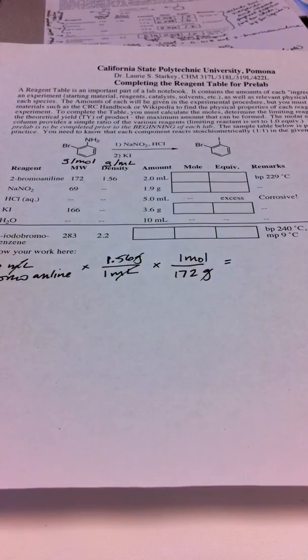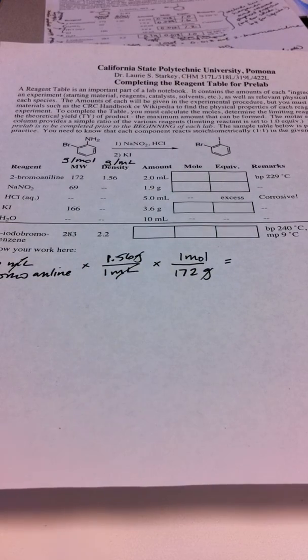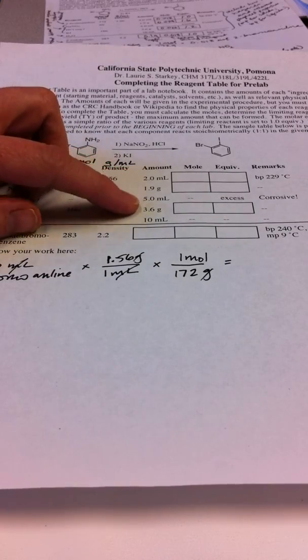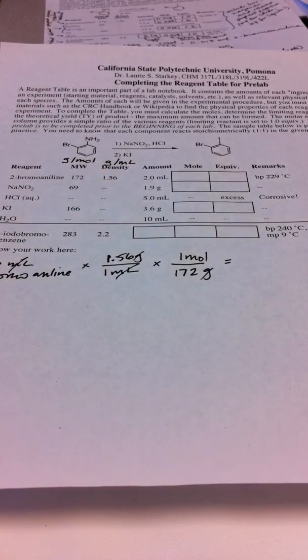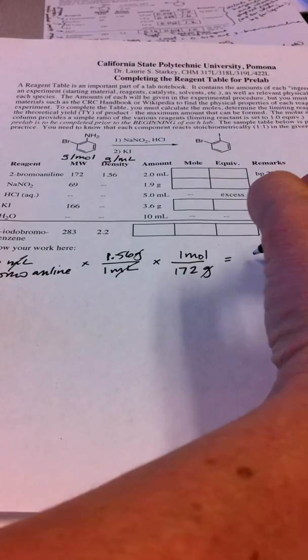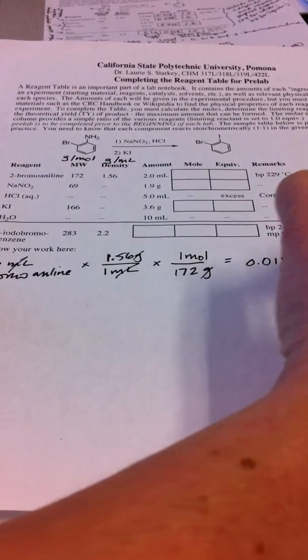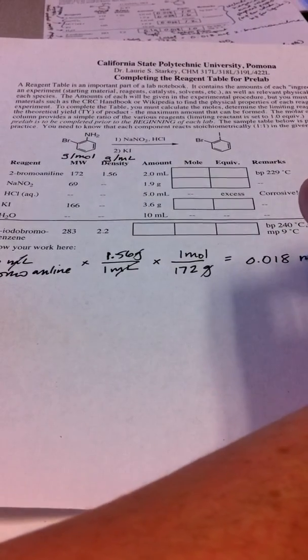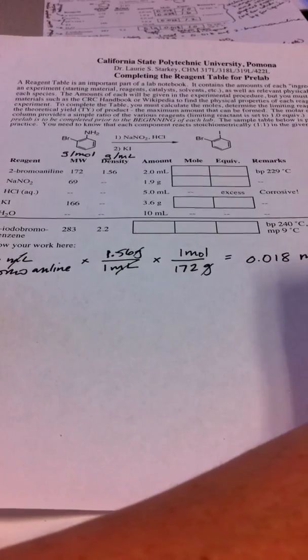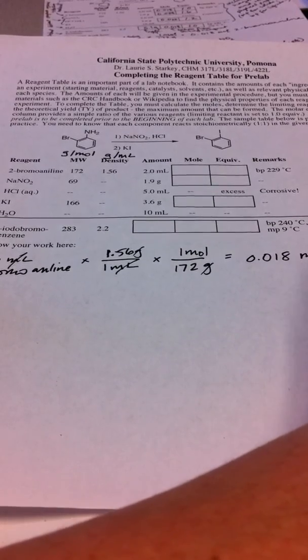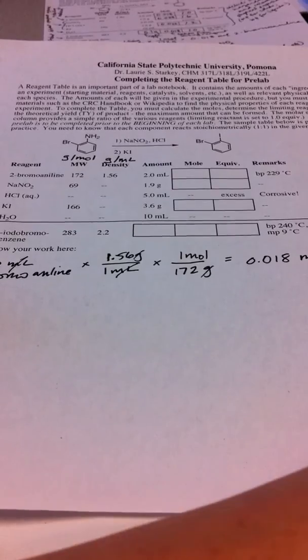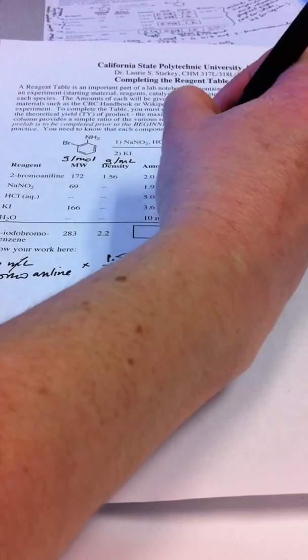Now let's think about significant figures. How many significant figures should we have in our answer? Looks like all of our amounts are given in two significant figures. So let's keep that and we get 0.018 moles of the 2-bromoaniline. That's the number we're going to put in our table, 0.018.